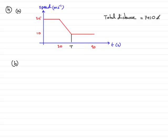Now, because total distance is the area under the graph, or is represented as the area under the graph, I'm going to split this up into a rectangle, a trapezium, and another rectangle.